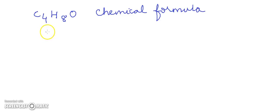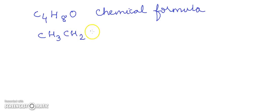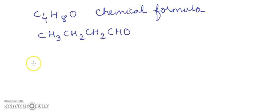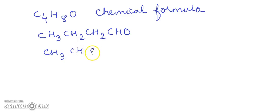For the chemical formula C4H8O, we can have the simple chain CH3-CH2-CH2-CHO as the first isomer, and next we can have a branched aldehyde: CH3-CH(CH3)-CHO.